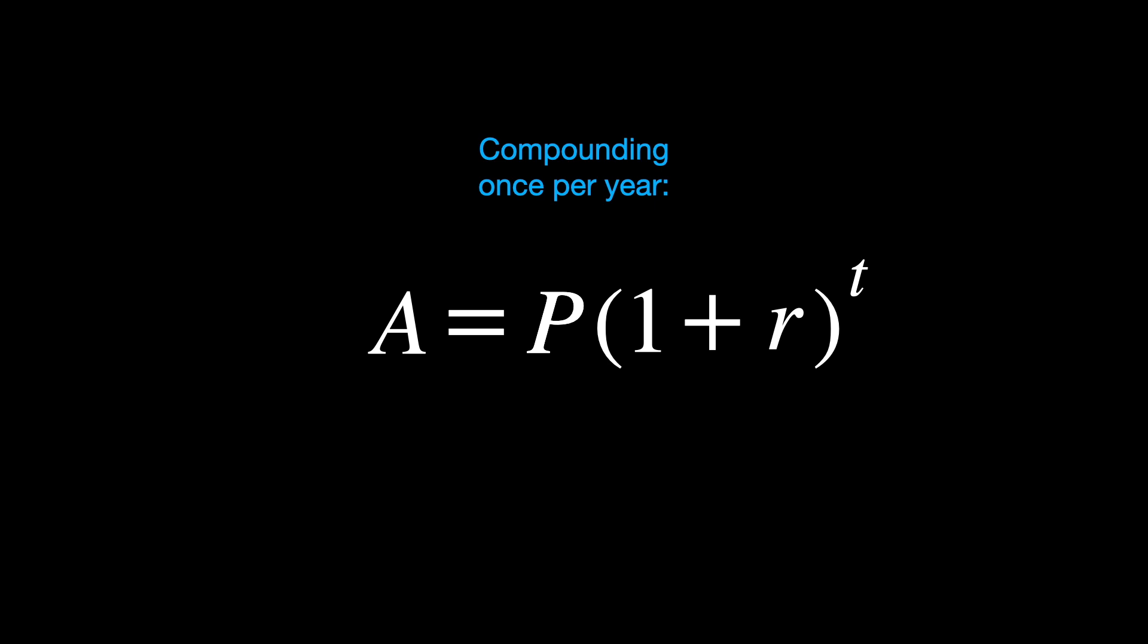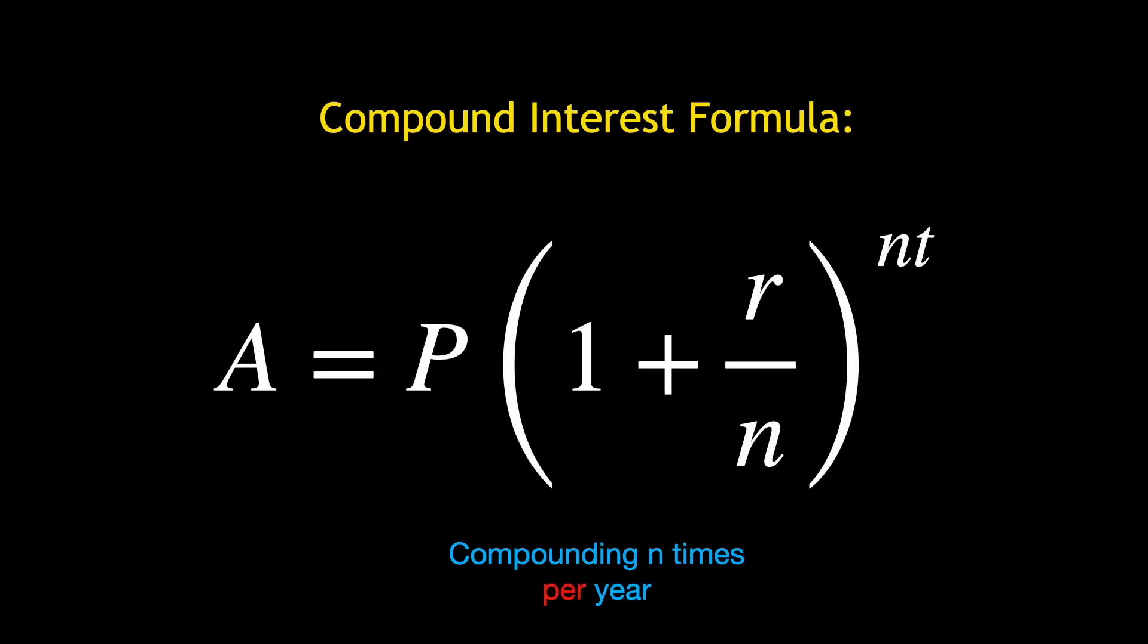But just as before, we can compound as often as we like, say, n times per year. We do this by dividing the rate by n, and multiplying the number of periods by n, giving p times 1 plus r over n to the nt. This is the standard compound interest formula you'd learn in pre-calculus or in a business math class.